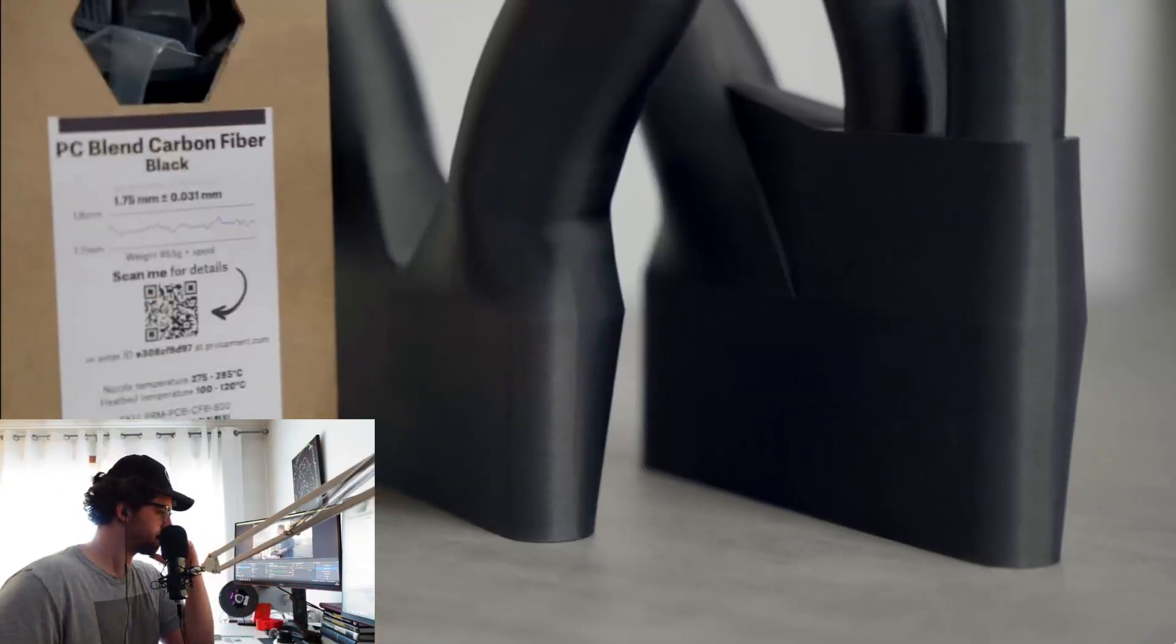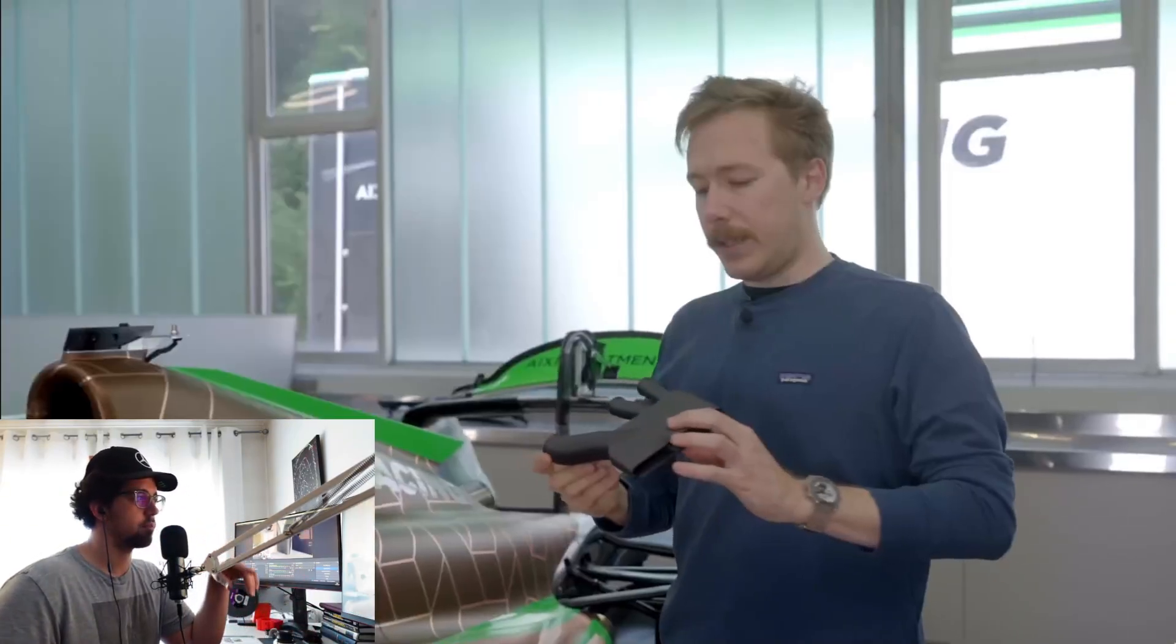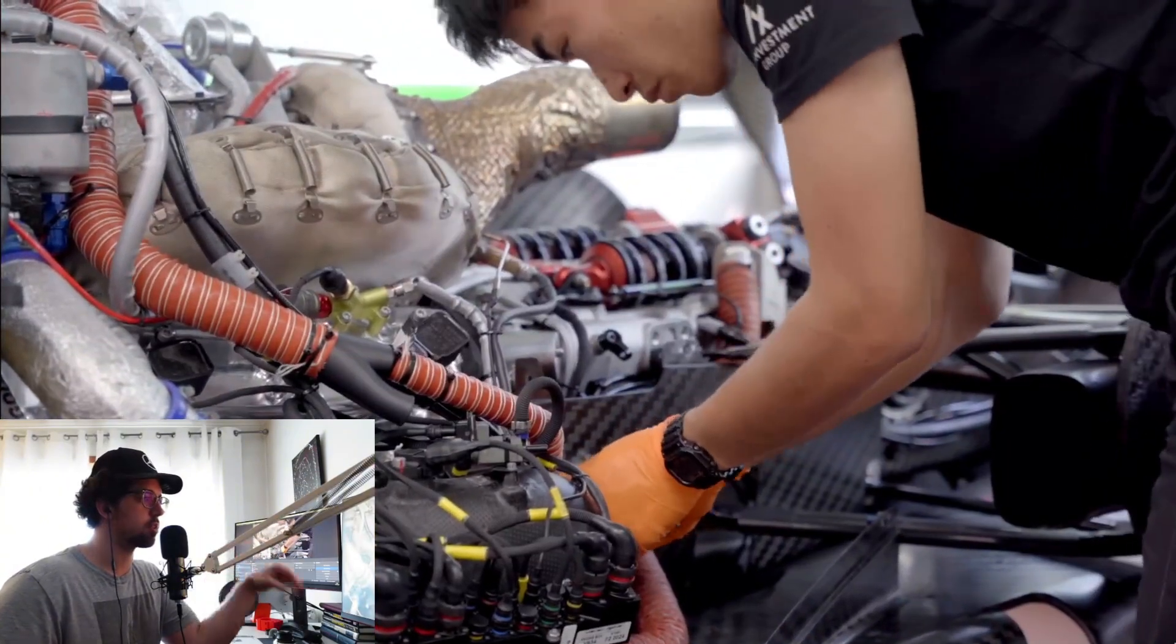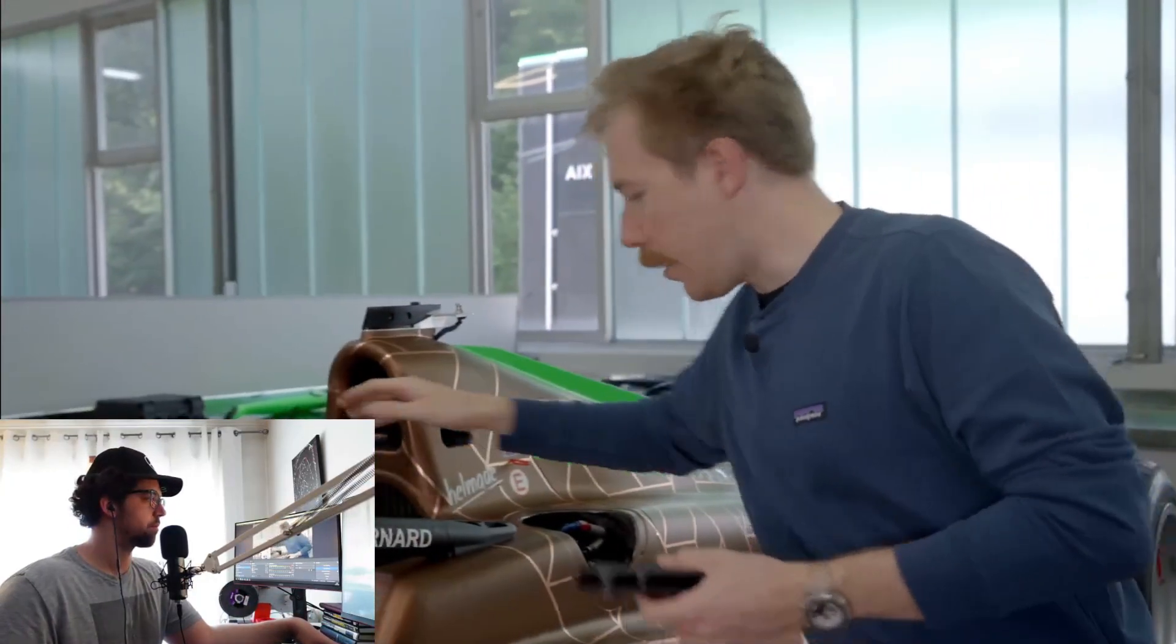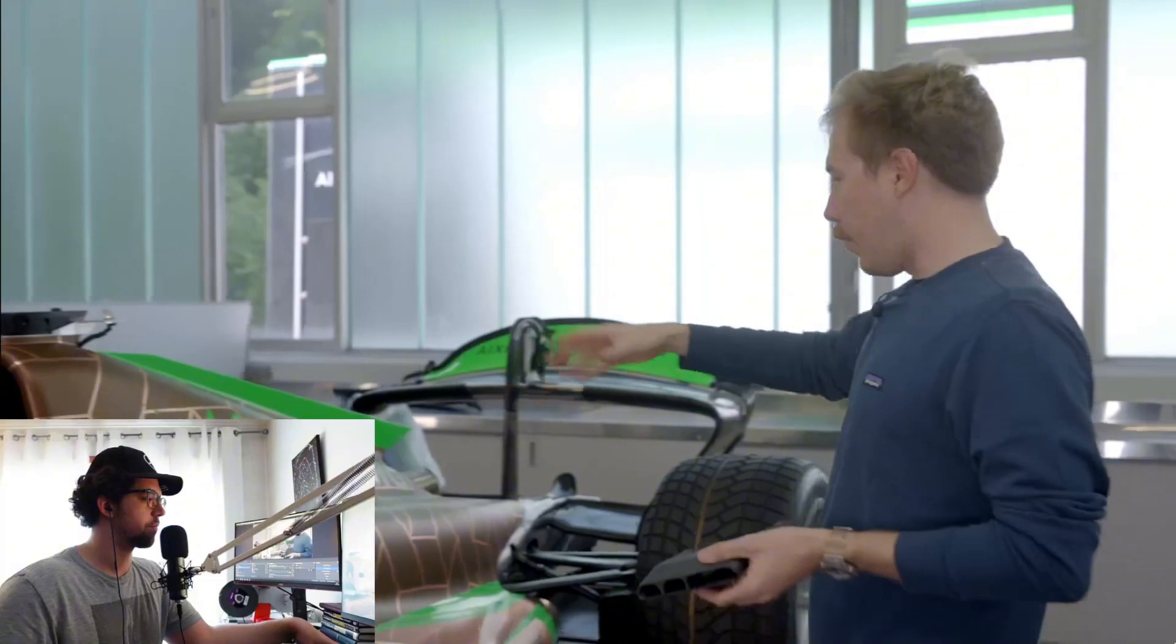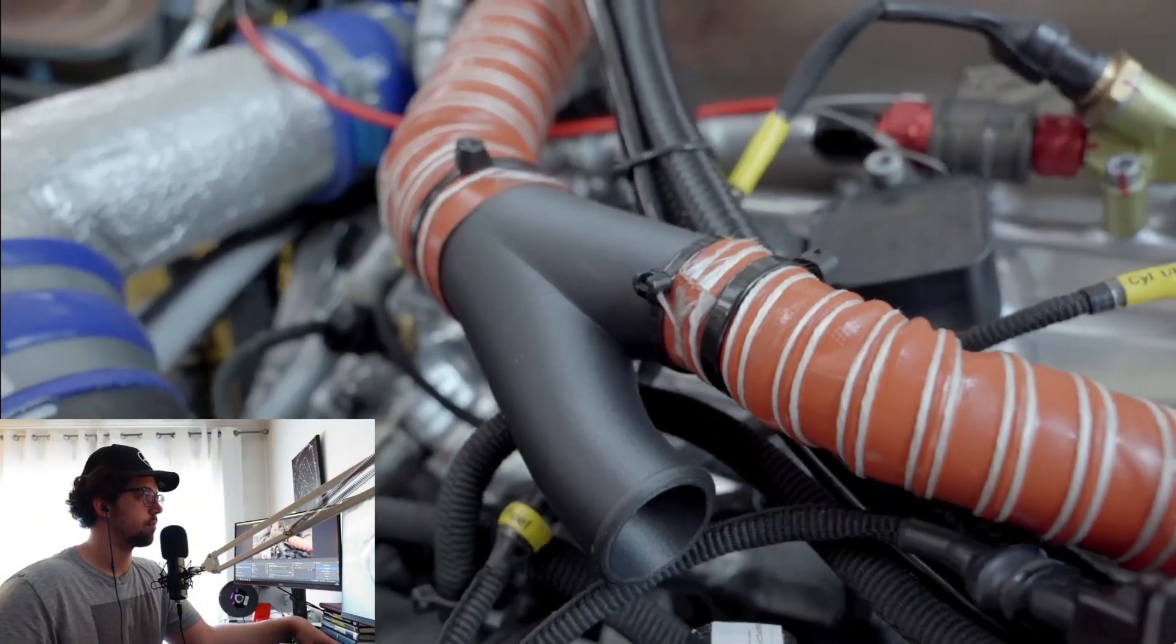From here we use all the PC carbon fiber. For example, there is this part that is here to guide the flow of air in the engine, and we decide which part we want to cool. So the air comes in here, goes through this part, and after cools down and goes where we decide to bring it.